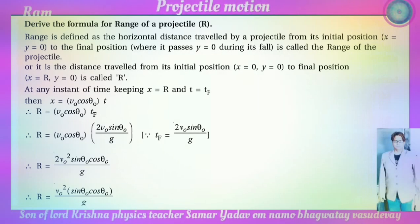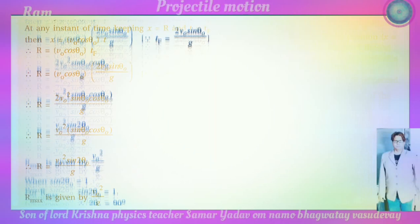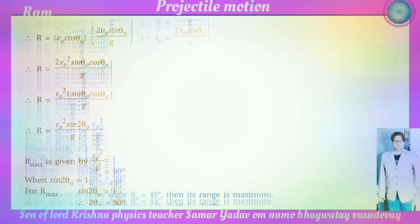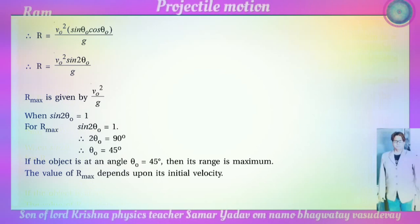Simplifying, R equals 2 v-zero-squared sin theta-zero cos theta-zero divided by g, which equals v-zero-squared sin 2theta-zero divided by g. Therefore R_maximum equals v-zero-squared divided by g, when sin 2theta-zero equals 1. This means 2 theta equals 90 degrees, so theta equals 45 degrees. If the object is projected at theta-zero equal to 45 degrees, the range is maximum, and the value of R_maximum depends on the initial velocity.